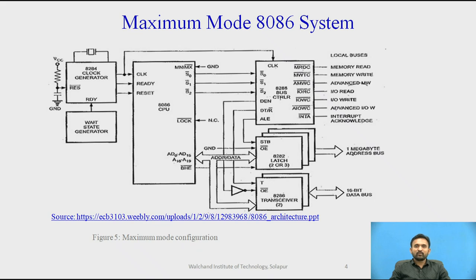The AEN, IOB, and CEN pins are specifically useful for multiprocessor systems. AEN and IOB are generally grounded, and the CEN pin is usually tied to plus 5 volts.